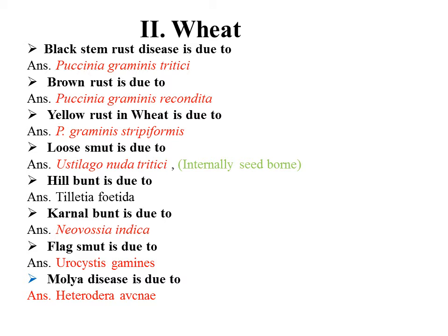The major rust diseases of wheat are black stem rust, brown stem rust, and yellow stem rust. Brown rust is caused by Puccinia graminis recondita; black rust and yellow rust are both caused by Puccinia graminis tritici. Yellow rust is an internally seed-borne disease.